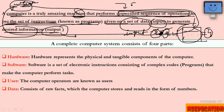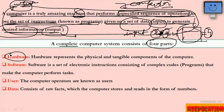So the basics about computers — I think most people already know a little. Let's talk about computer parts. Broadly, computers have four parts. First is hardware — hardware is what we can touch, like hard disk, printer, keyboard, mouse, etc.